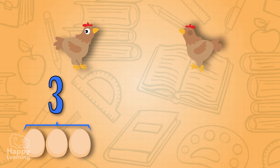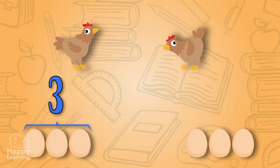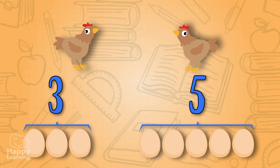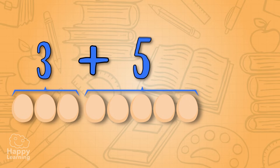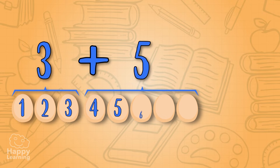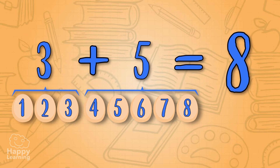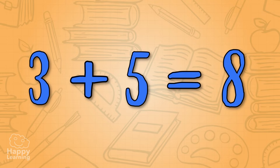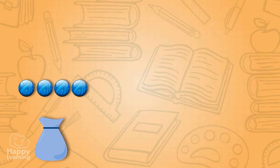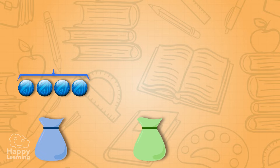Let's do another example. If a chicken lays three eggs and another chicken lays five eggs, how many eggs do we have in total? Let's see: three eggs plus five eggs is one, two, three, four, five, six, seven, and eight eggs. When we're adding, we only write down the number — we don't say what we're talking about, so it's easier to write.